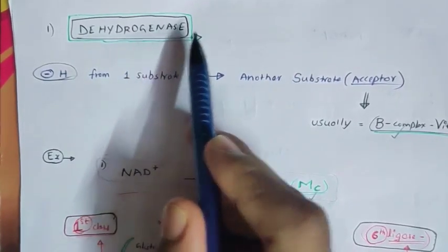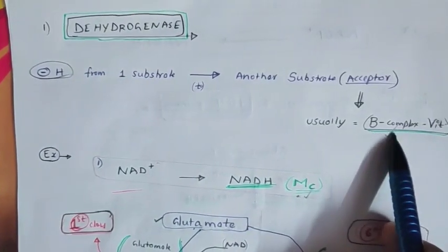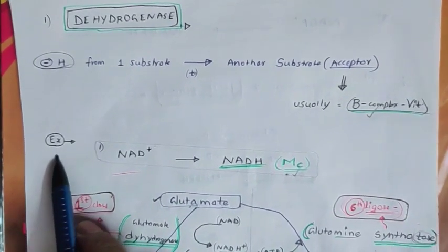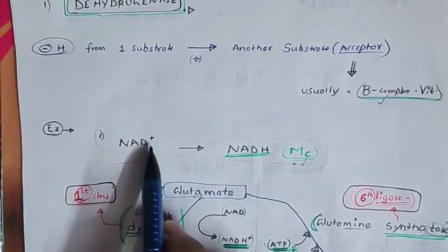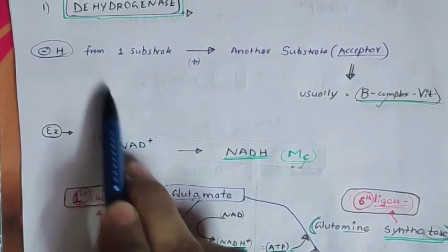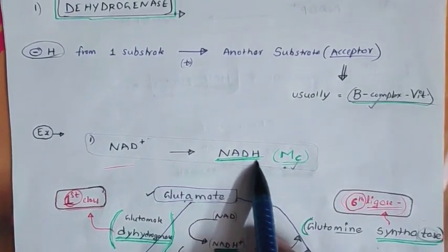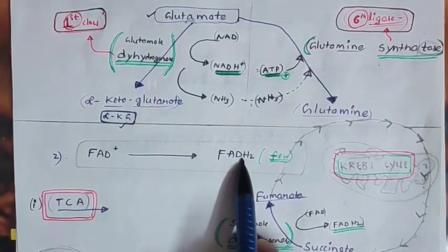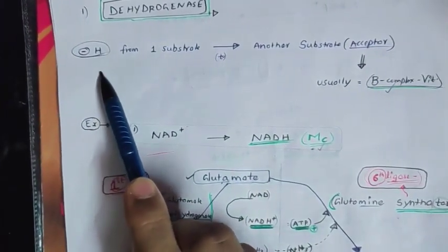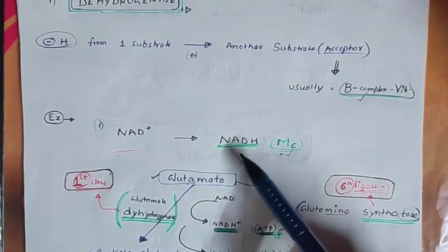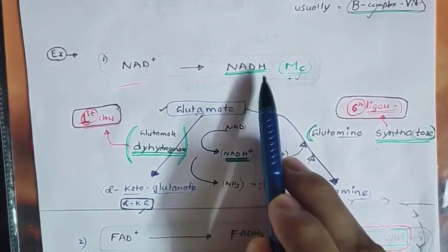Coming to the first subclass of Oxidoreductase — Dehydrogenase. Dehydrogenase means removal of hydrogen from one substrate to another substrate, and the acceptor is a B complex vitamin. Example: NAD is converted into NADH, and FAD is converted into FADH2. When hydrogen is removed from the main substrate, it is added to NADH, FADH2, or NADPH.